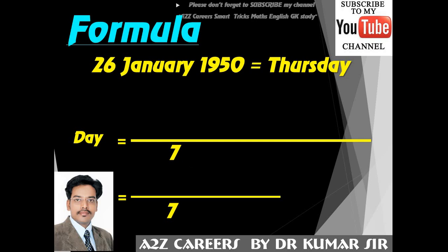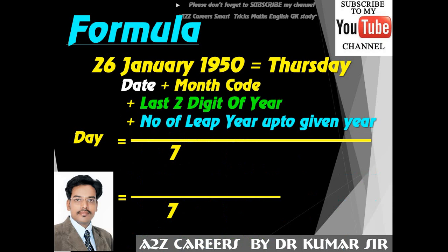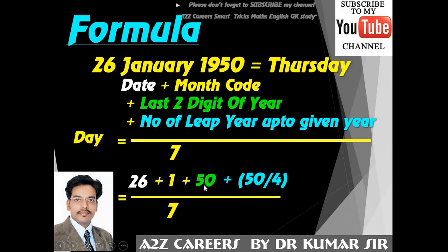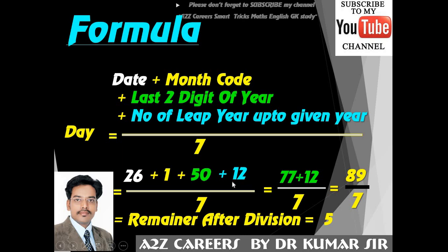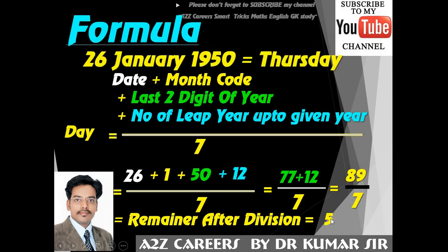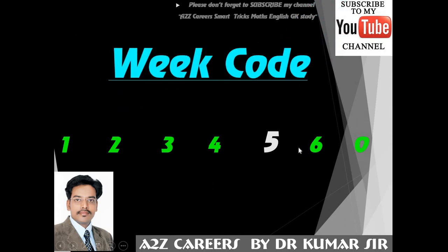We will calculate an example: 26th January 1950, our Constitution Day, which was a Thursday. Recalling the formula — date + month code + last two digits of year + number of leap years, all divided by 7. Take date 26, plus January month code 1, plus last two digits 50, plus number of leap years in 50 years: divide 50 by 4 which cuts 12 times, so 12 leap years. Total is 89. Divide 89 by 7: the remainder is 5. And 5 is the code of Thursday — confirmed!